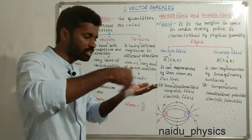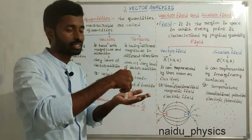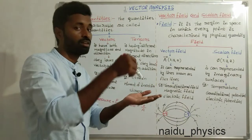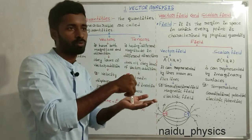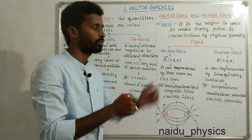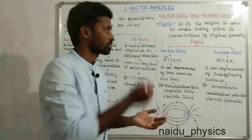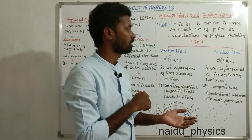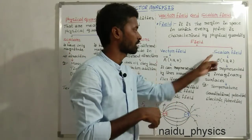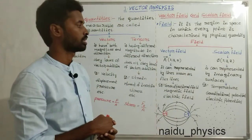If a region where each and every point is characterized by a vector physical quantity, we explain it as a vector field. If it is characterized by a scalar physical quantity, we explain it as a scalar field.